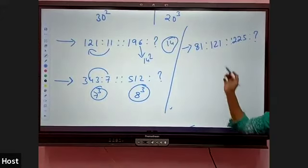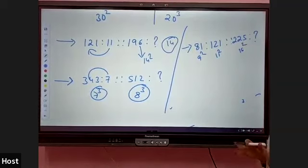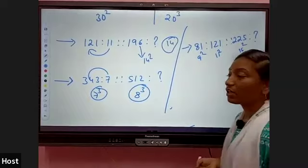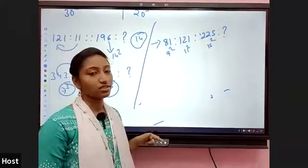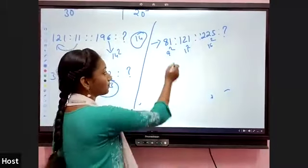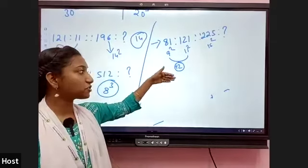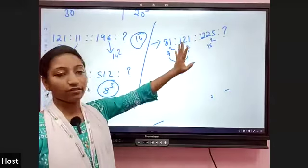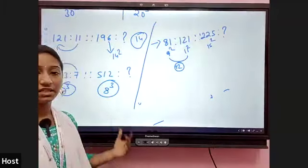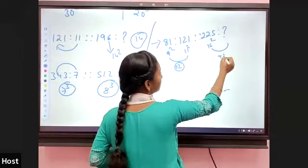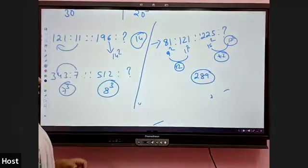Here they have given all squares: 81 is the 9th square, 121 is the 11th square, and 225 is the 15th square. You should observe the pattern in the question. The difference between 9 and 11 is 2, so the theme is plus 2. Applying the same theme to 15: 15 plus 2 is 17, and 17 squared is 289.